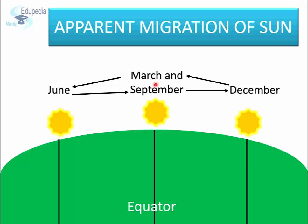It appears to us that the sun is migrating in the sky. But the fact is that the sun is not moving — we are moving. We are moving around the sun on an inclined axis, which is making all these changes.